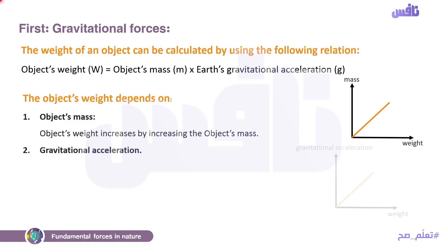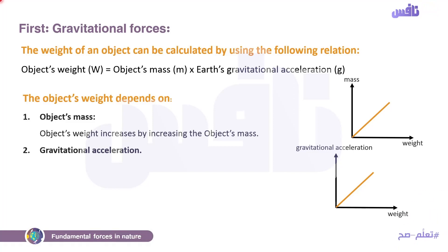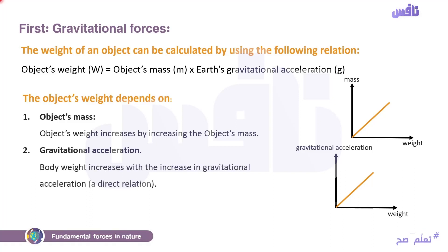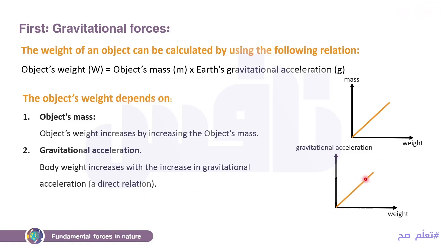ايه كمان؟ Gravitational acceleration. By increasing the gravitational acceleration the weight increases. كل ما البلانت ده الجاذبية بتاعته كبيرة فيتأثر بالobject أكتر فالweight increases. عشان كده هنا برضو relation ايه؟ Direct proportional. Body weight increases with the increase in gravitational acceleration — direct relation. يعني لو ده increase ده increase، ولو ده decrease يبقى ده decrease. Represented by a straight line from origin point.